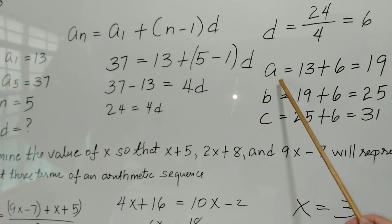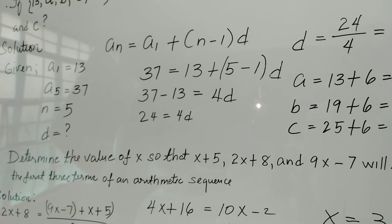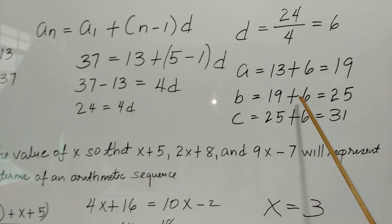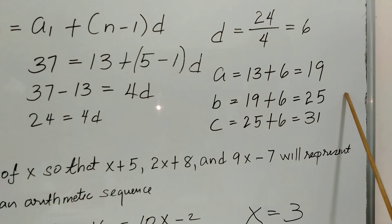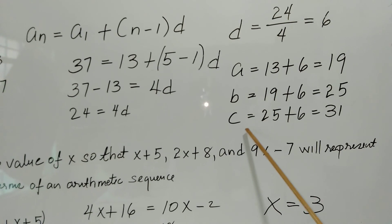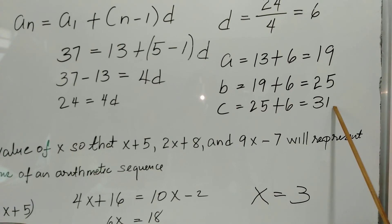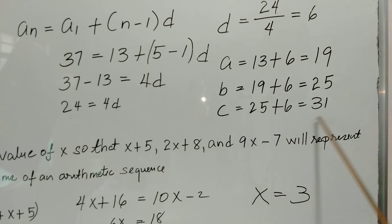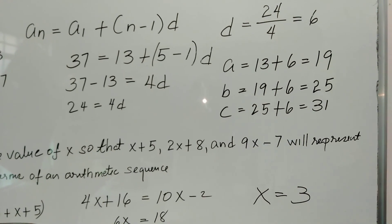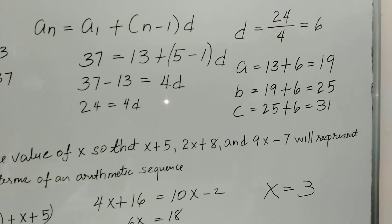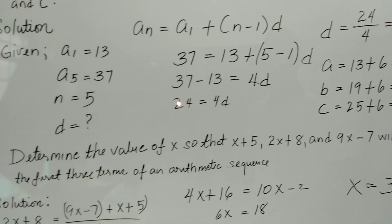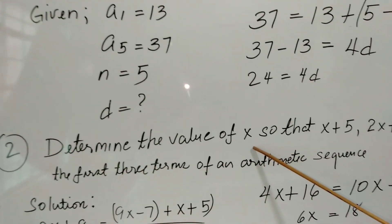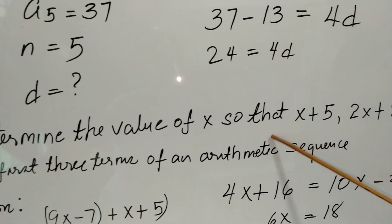To get the value of a: a equals the first term 13 plus 6, because a is the second term. So 13 plus 6 equals 19. Then b equals 19 plus 6, which is 25. And c equals 25 plus 6, which is 31. The last term is 37. So our answers are correct.